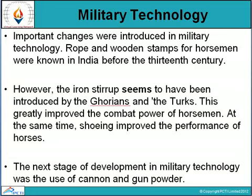The crossbow has a traditional tube at a right angle to the bow, into which the arrow was fitted. The tube gave greater accuracy to the direction of the arrow. This tube seems to be a direct precursor of the barrel of handguns. The next stage of development in military technology was the use of cannon and gunpowder.